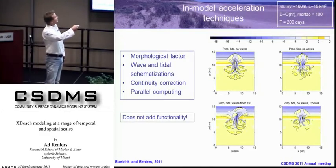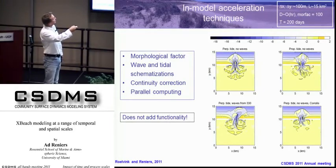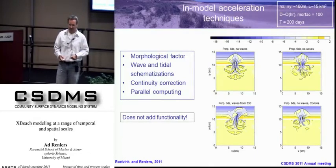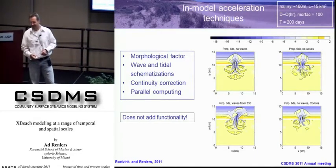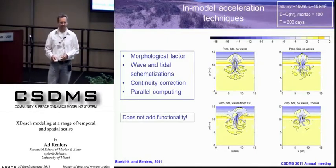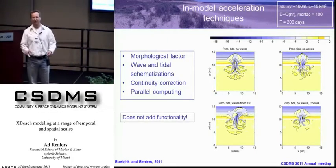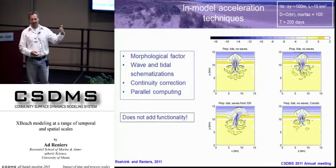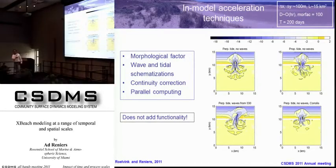I give the typical dimensions of the problem that we're calculating — space, time scales, time steps, duration — and you have to take into account that this is all based on my very old laptop, so you can do a lot faster if you have a better laptop. This is some examples that Donald Ruvink calculated for the formation of an ebb-tidal and flood-tidal delta in a situation typical for the Dutch coast. The key here is that to get to longer time scales, we use a morphological factor, and there are actually a lot of other things you can do to speed up the process.